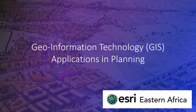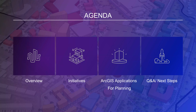The agenda of this engagement is to look at the overview of what the GIS systems are and how you can bring them to the various initiatives we have in terms of GIS and planning. We'll look at the different applications for planning in ArcGIS, then have a Q&A session, which will lead us to the next step. We'll have another session where you'll actively interact with the products using your own data or local data to appreciate how effective the systems are.